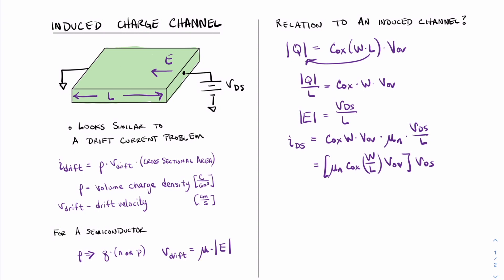If we look at this, on the left side we have a current, on the right side we have a voltage, and therefore everything else must be related to a resistance.